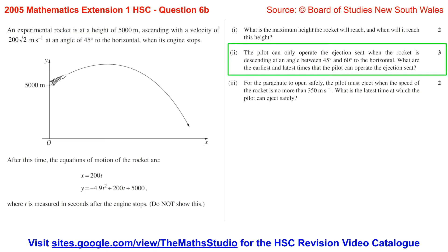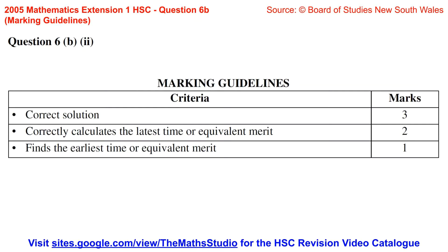Part 2. The pilot can only operate the ejection seat when the rocket is descending at an angle between 45 degrees and 60 degrees to the horizontal. What are the earliest and latest times that the pilot can operate the ejection seat? The marking guidelines: for one mark, finds the earliest time or equivalent merit; for two marks, correctly calculates the latest time or equivalent merit; for three marks, correct solution.